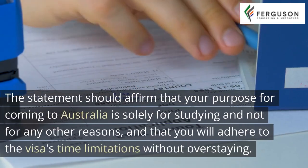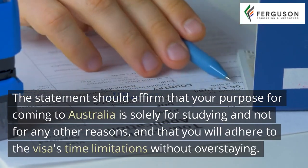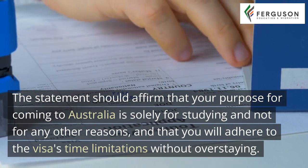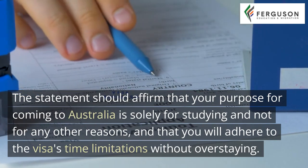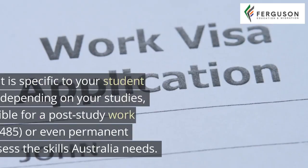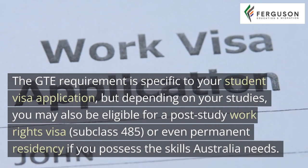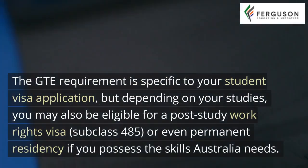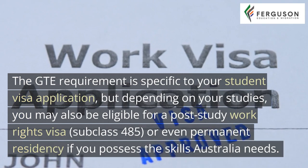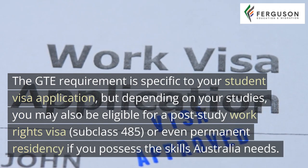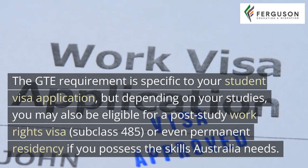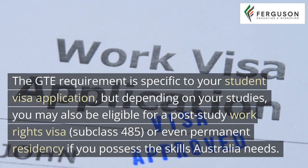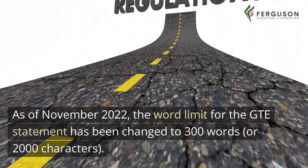The statement should affirm that your purpose for coming to Australia is solely for studying and not for any other reasons, and that you will adhere to the visa's time limitations without overstaying. The GTE requirement is specific to your student visa application, but depending on your studies, you may also be eligible for a post-study work rights visa, subclass 485, or even permanent residency if you possess the skills Australia needs.